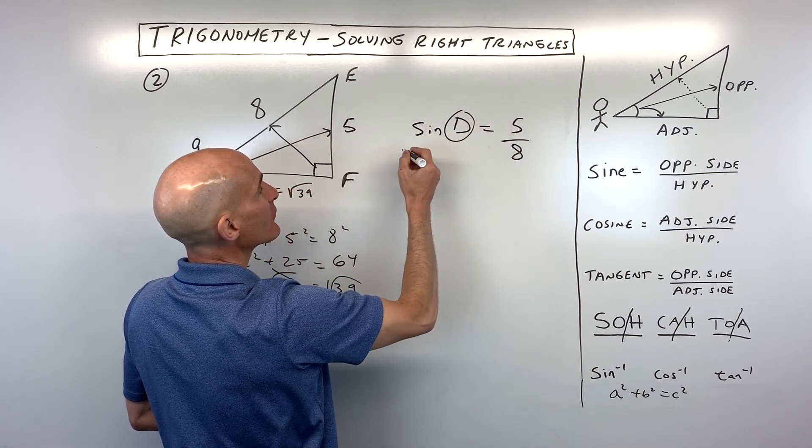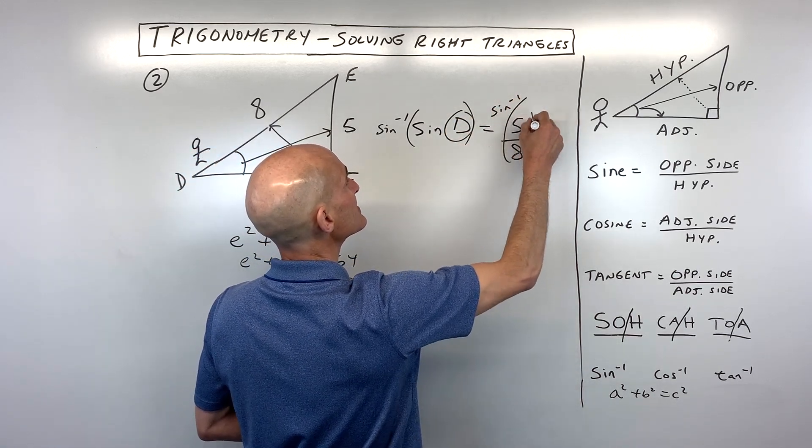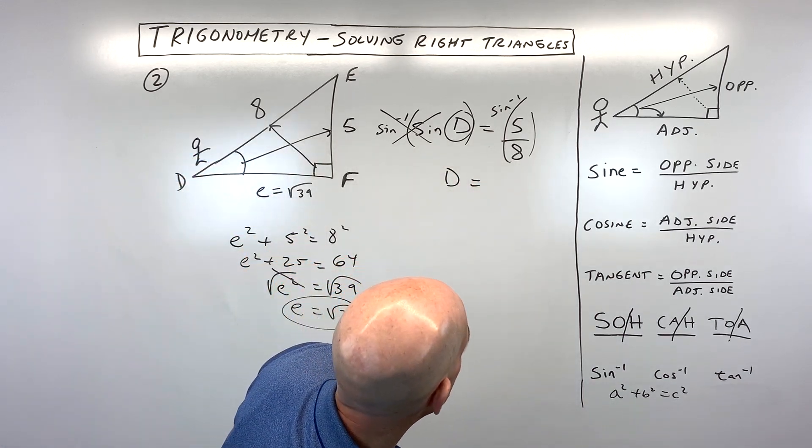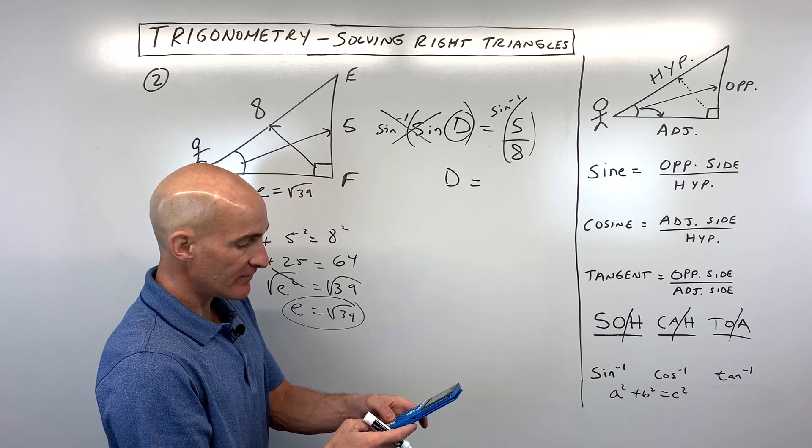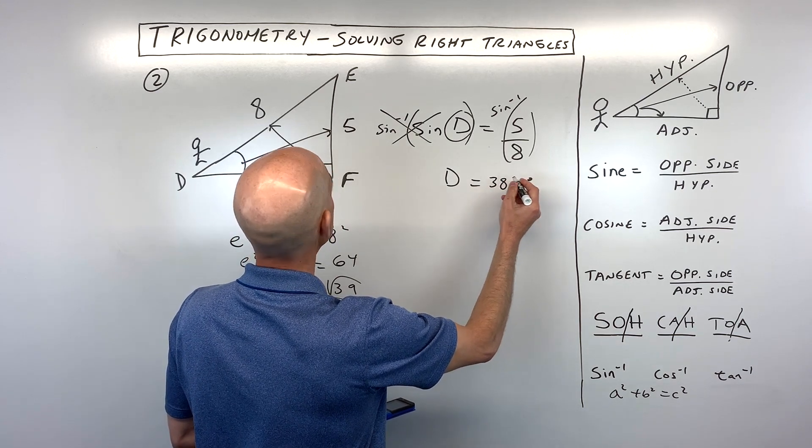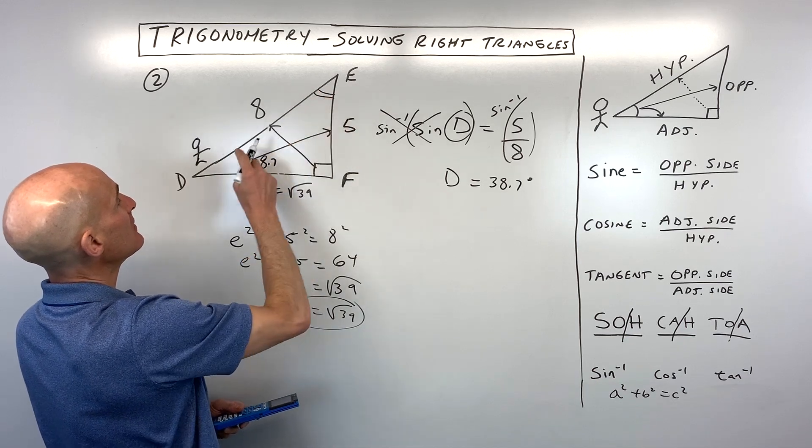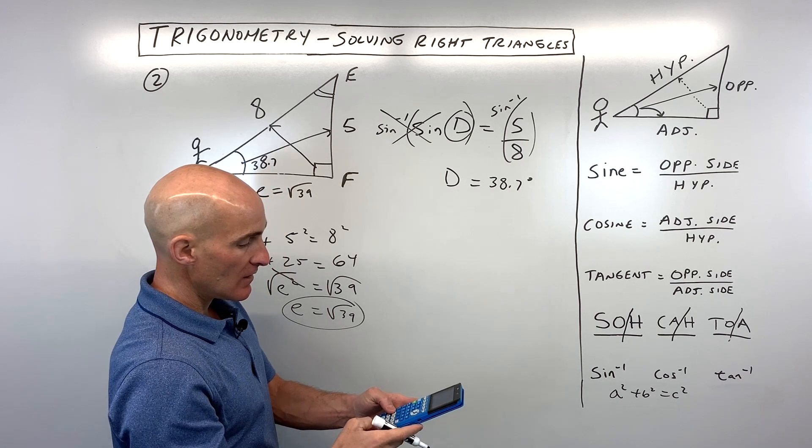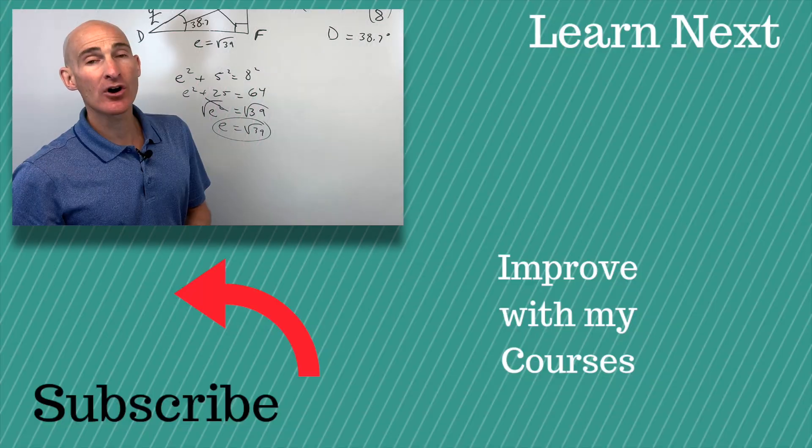Now, whenever we want to solve for the missing angle, that's when the inverse trig functions come into play. In this case, the sine inverse, because the sine and sine inverse undo one another. Let's see what that comes out to on the calculator. We've got sine inverse of 5 eighths, which is 38.7 degrees approximately. So that's this guy right here. And then if we want to solve for angle E, these two angles add up to 90. So if I just do 90 minus 38.7, that's 51.3. And you solved the triangle - all the angles, all the sides.